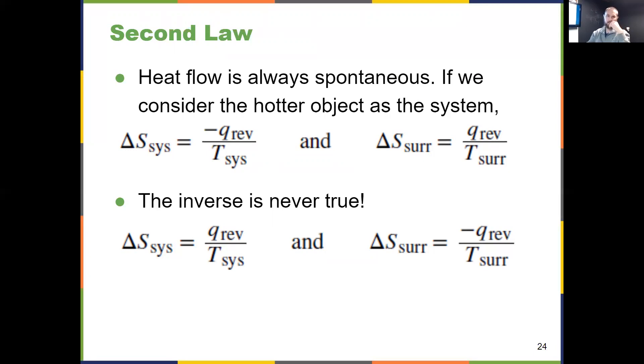Let's return to thinking about thermal energy flowing from hot to cold - a spontaneous process with no exceptions. If the hot thing is our system giving off thermal energy to the cold surroundings, delta S of our system is negative q_rev over T_sys.